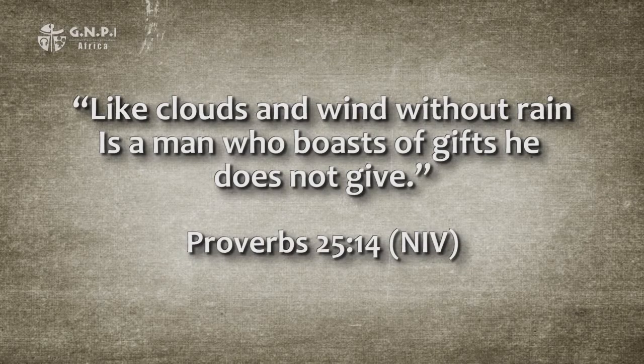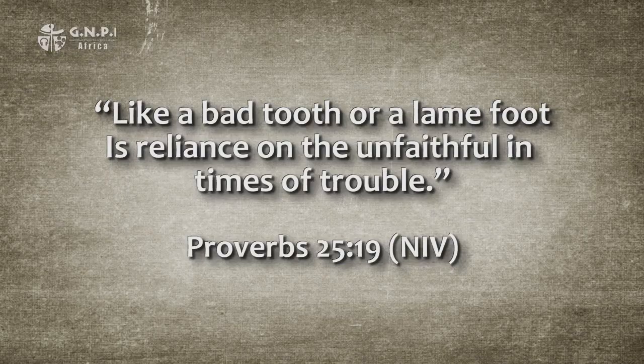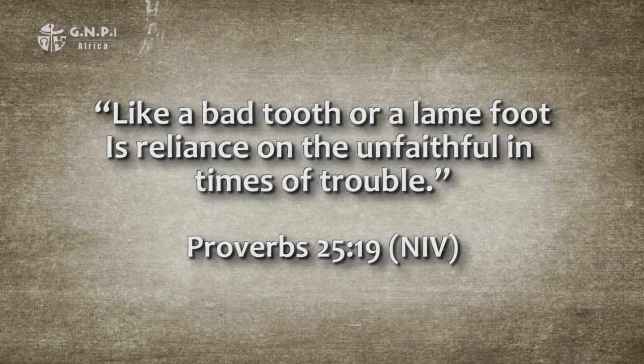Let us look at the simile proverb in chapter 25 verse 14: 'Like clouds and wind without rain is a man who boasts of gifts he does not give.' We have all seen clouds and wind that gave the impression rain was near and then it did not rain — sometimes it has even looked and smelled like rain, with thunder and lightning, yet it passed us by. The boasting of the man is intended to parallel the thundering and lightning of the clouds that give no rain — a lot of wind and noise and visual display, but no real personal benefit. Another simile proverb is found in chapter 25 verse 19: 'Like a bad tooth or a lame foot is reliance on the unfaithful in times of trouble.' The point of the second line connects the physical pain to the emotional and social pain we suffer when someone fails to help us in a time of real need.